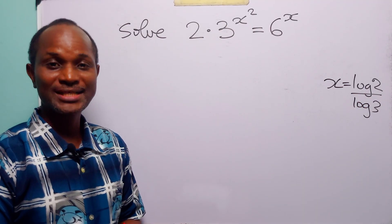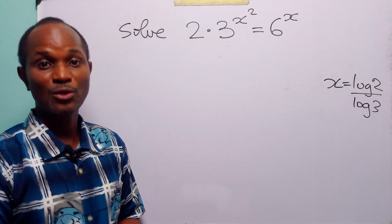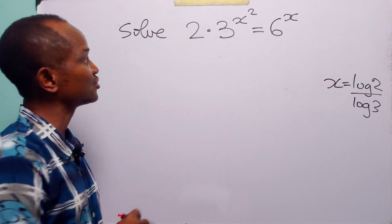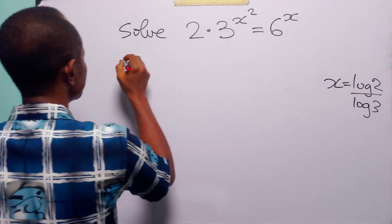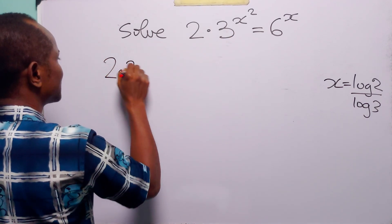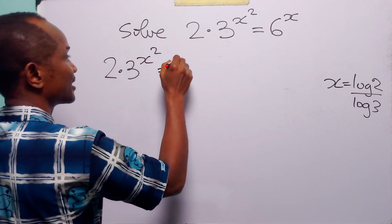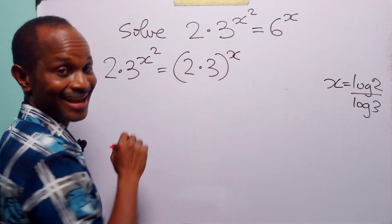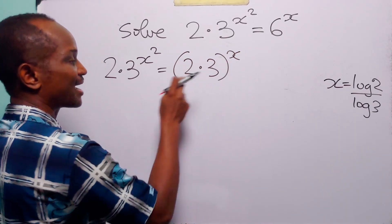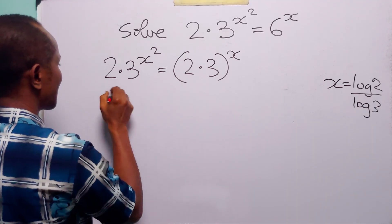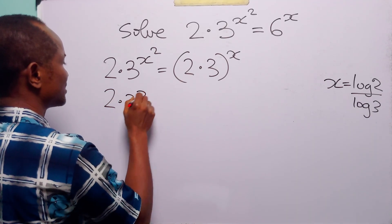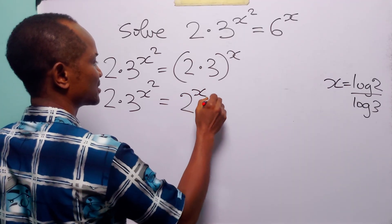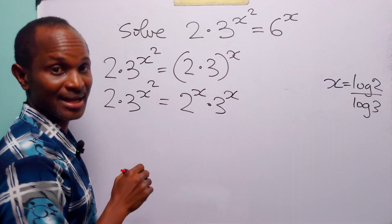If you don't care to solve quadratic equations with log coefficients, the alternative way of solving this problem is to start by writing this equation as 2 times 3 to the power x squared is equal to 2 times 3 to the power x. Then we expand the right-hand side: 2 times 3 to the power x squared is equal to 2 to the power x multiplied by 3 to the power x.